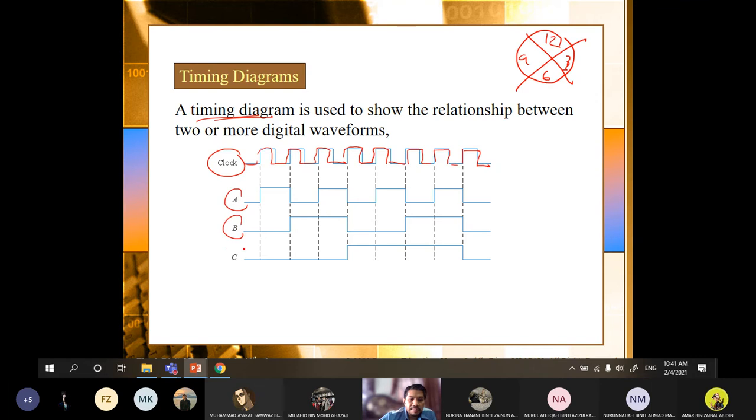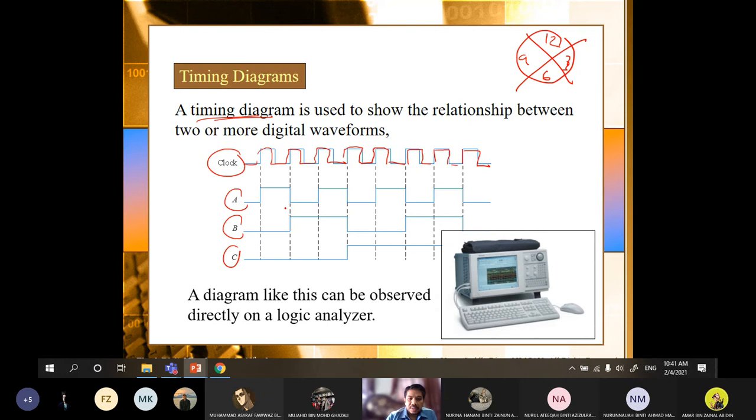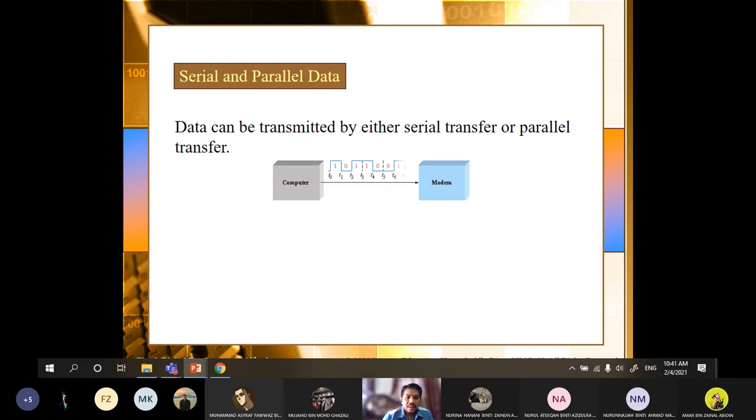We can look at different inputs of the signal here at logic analyzer. So logic analyzer can display our clock here. And then also input A, input B, input C. So this is for example just to show you different waveforms representing clock and also three digital inputs.